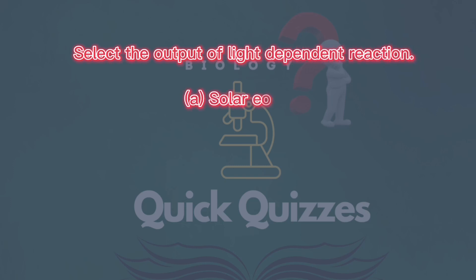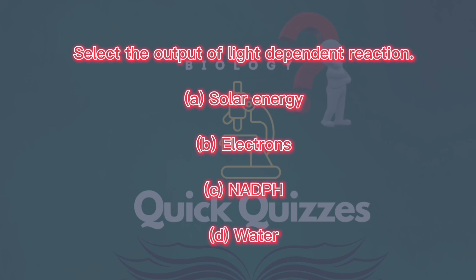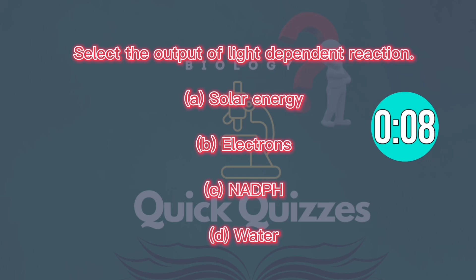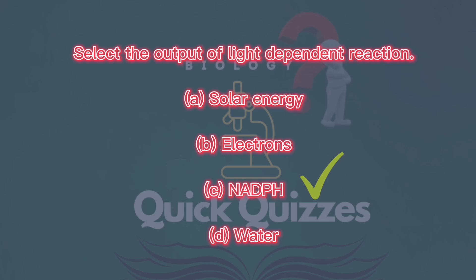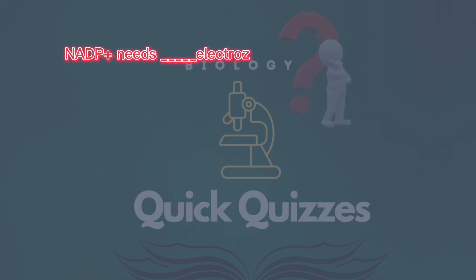Select the output of light-dependent reaction: A) solar energy, B) electrons, C) NADPH, D) water. Correct answer: C, NADPH.